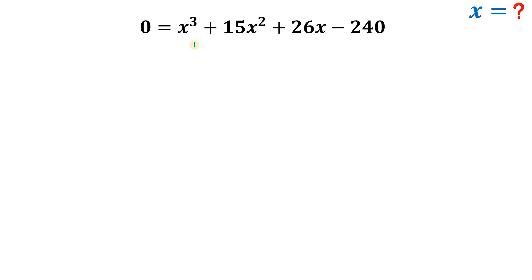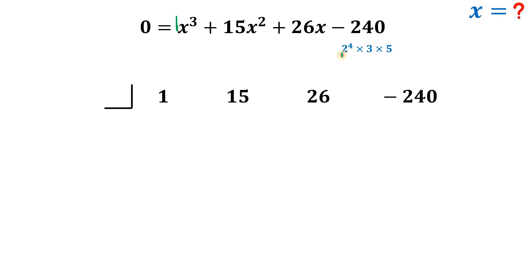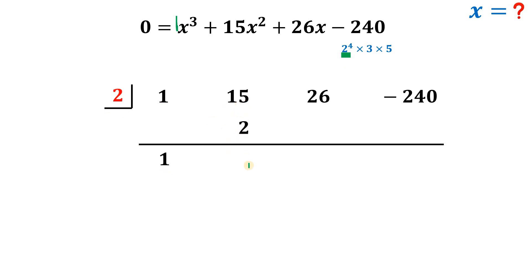This cubic equation is hard to factor directly, so we use synthetic division. We need factors of the constant term 240, where 240 = 2⁴ × 3 × 5. Setting up the coefficients: 1, 15, 26, −240. Testing x = 2: bring down 1; 1×2=2; 15+2=17; 17×2=34; 26+34=60; 60×2=120; −240+120 ≠ 0, so x = 2 is not a root.